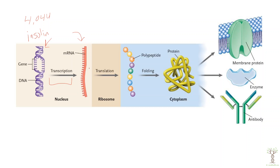When the mRNA molecule leaves the nucleus, it will go to a ribosome and translate that messenger RNA sequence into a protein sequence. Then we can fold that protein so that it is functional. It can be anything such as membrane proteins like sodium-potassium pumps or chloride channels, enzymes that help us digest food and drive other chemical reactions in our cells like when we make ATP.